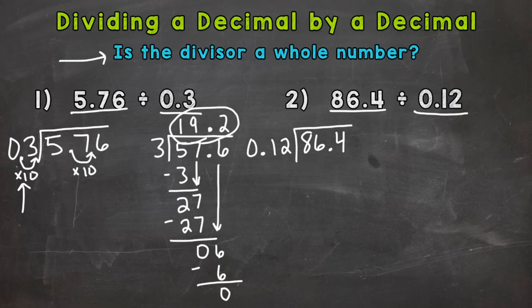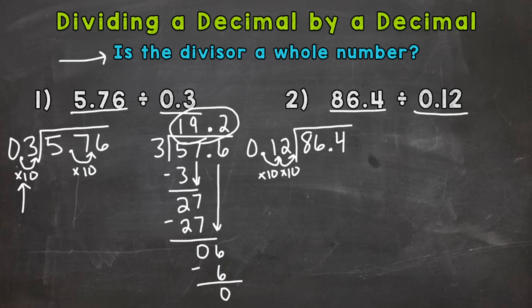We need to make it a whole number, so let's multiply by a power of 10. Multiply by 10 — the decimal moves between the one and the two. Is that a whole number? No. So we need to multiply by 10 again — that means multiplying by 100 total. We move the decimal twice on the outside, and we must do the same to the inside: move the decimal twice on 86 and four tenths, filling in a placeholder zero.